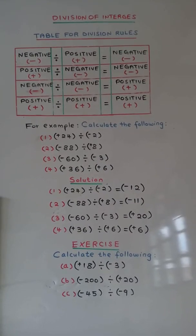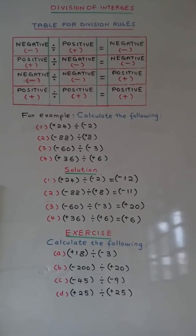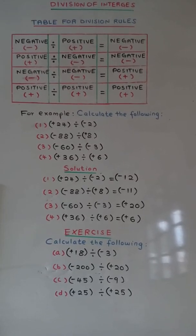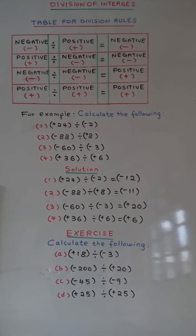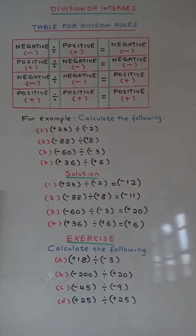C: negative 45 divided by negative 9. D: positive 25 divided by positive 25.